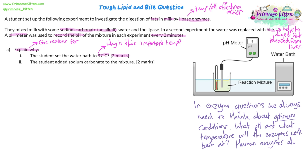37 degrees comes up a lot in questions like this because human enzymes always work best — their optimum is always around human body temperature, which is 37 degrees. If there's ever a question about why someone has set something up to be 37 degrees, the reason most of the time is because it's body temperature, and there'll likely be enzymes involved that come from the body.